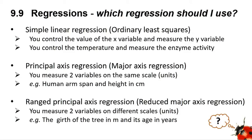If the two variables you are measuring are on the same scale, such as human arm-span and human height in centimetres, then you need to use a principal axis regression, sometimes called a major axis regression.